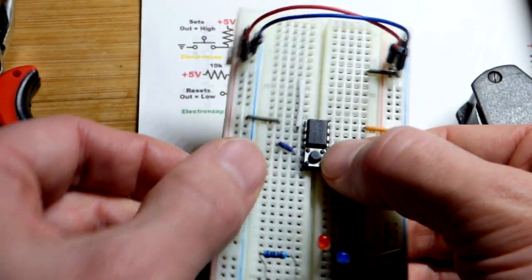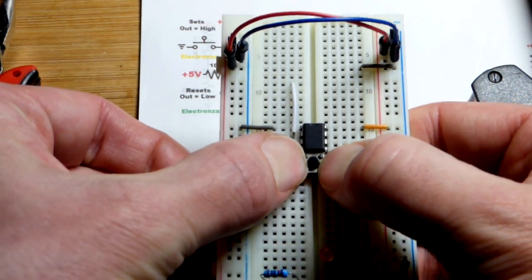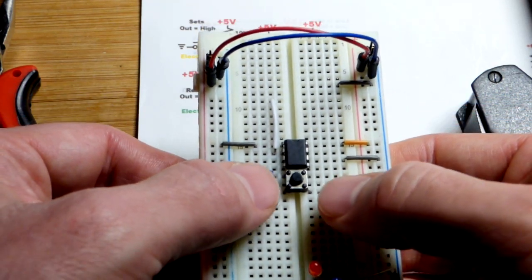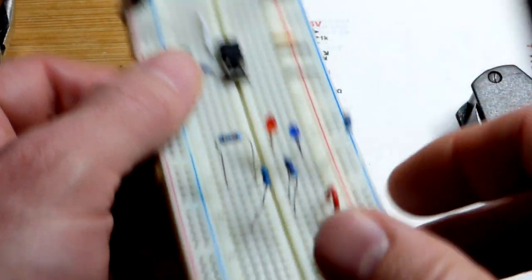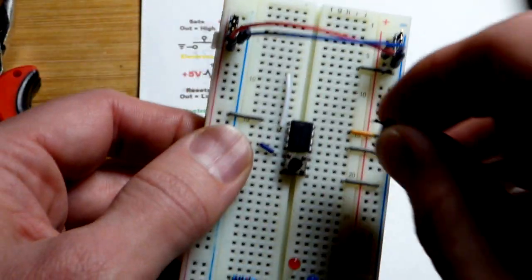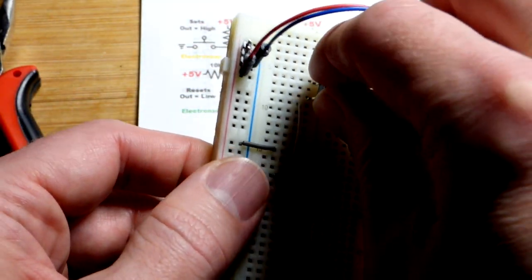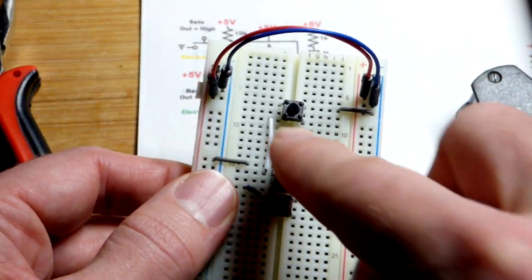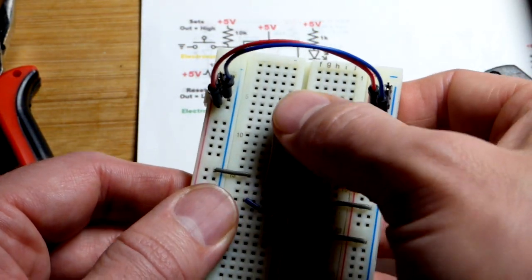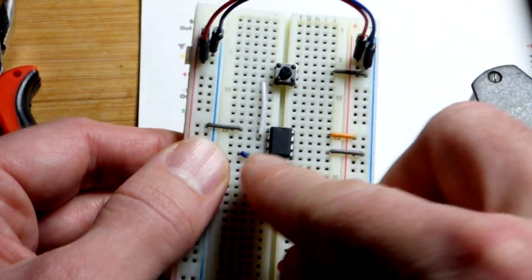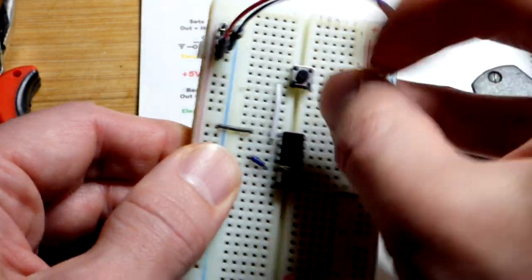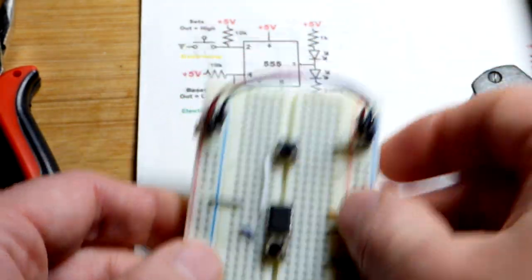This breadboard holds them pretty well. Higher quality boards have a lot more tension on them. I got jumpers bringing this one to pin 2, the trigger pin, and then a little jumper going to pin 4. We got a lot of space up here now.